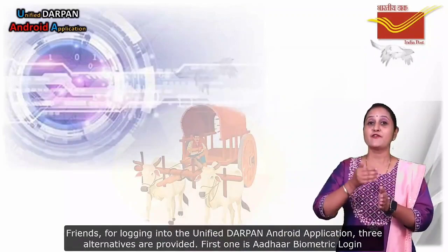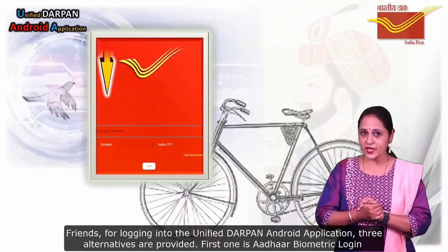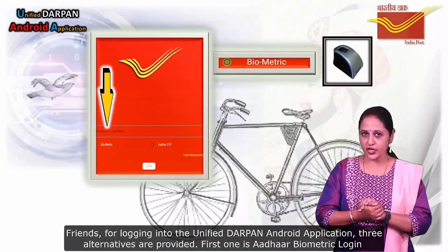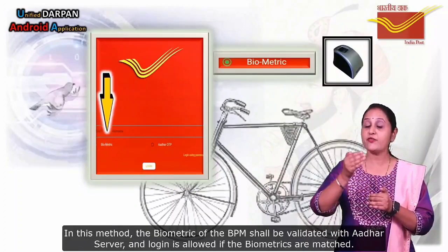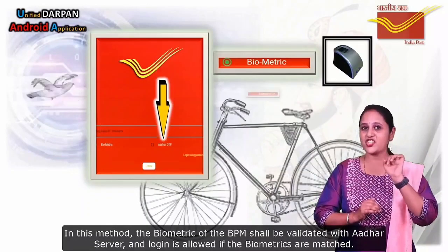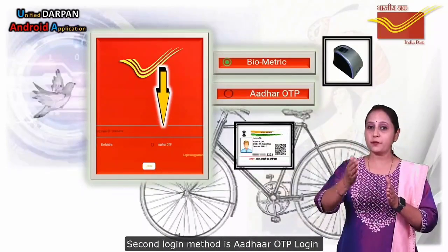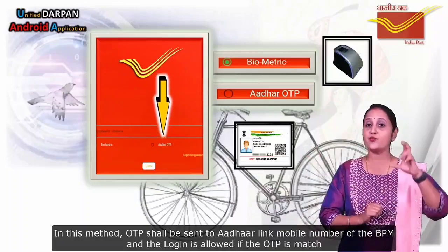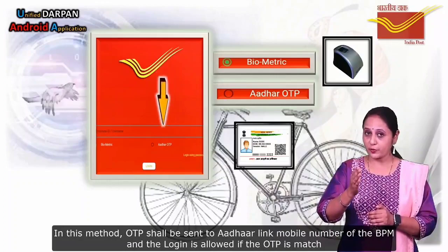For logging into the Unified DevPoint Android application, three alternatives are provided. The first one is Aadhaar biometric login. In this method, the biometric of the BPM should be validated with the Aadhaar server, and login is allowed if the biometrics are matched. The second login method is Aadhaar OTP login. In this method, an OTP shall be sent to the Aadhaar-linked mobile number of the BPM, and login is allowed if the OTP is matched.